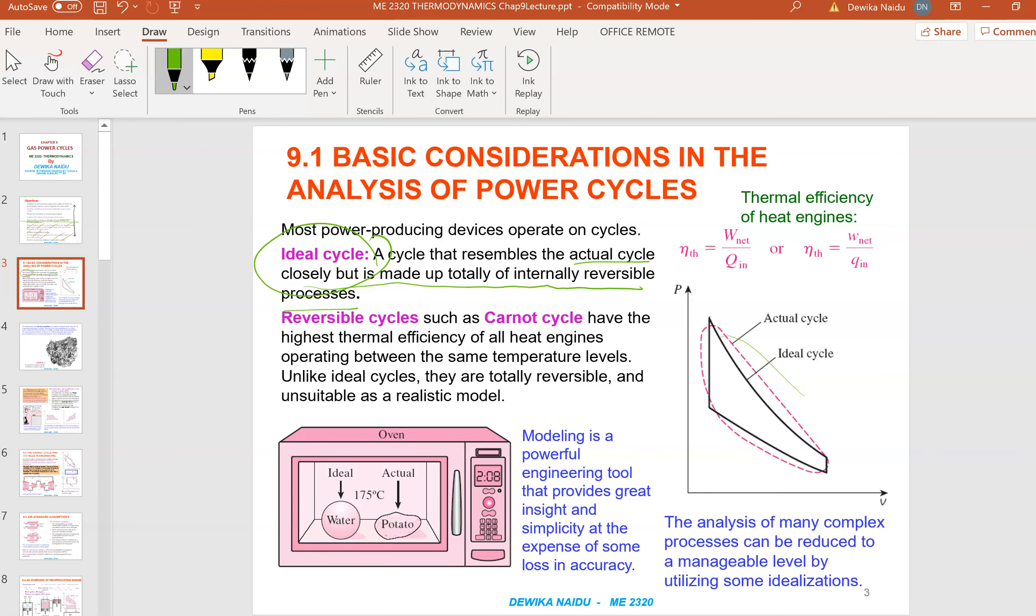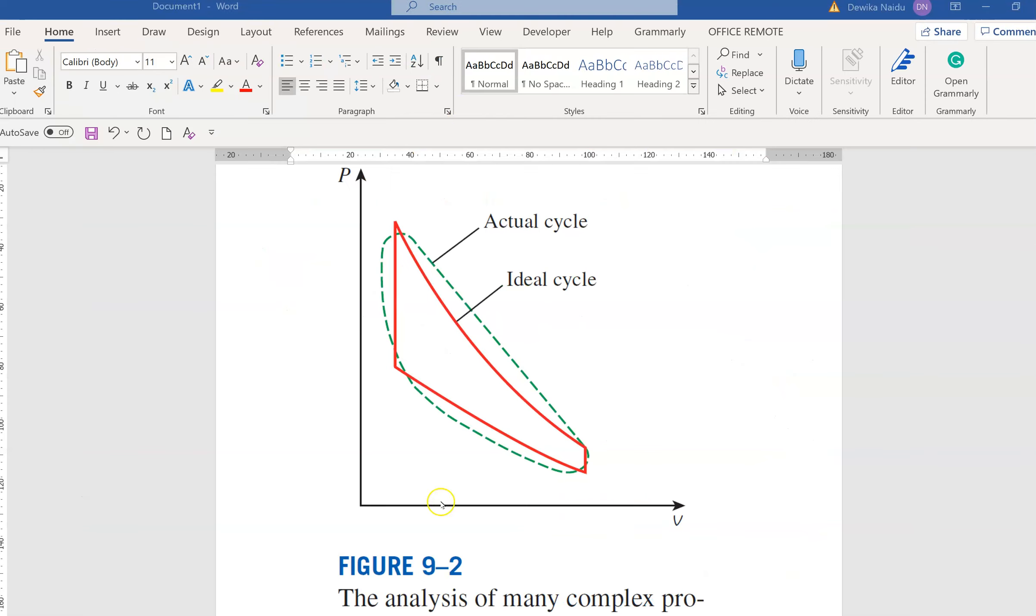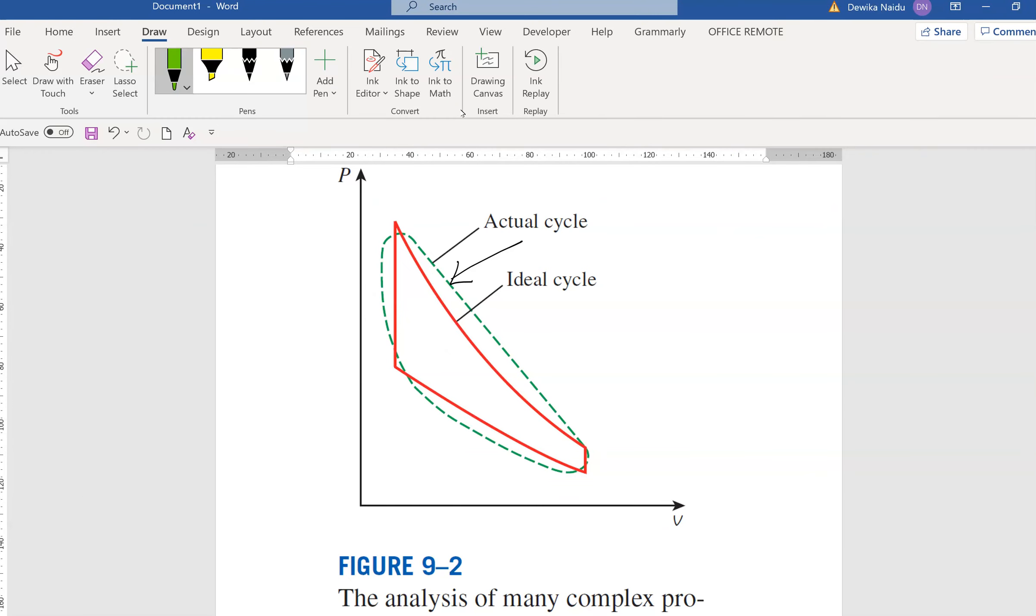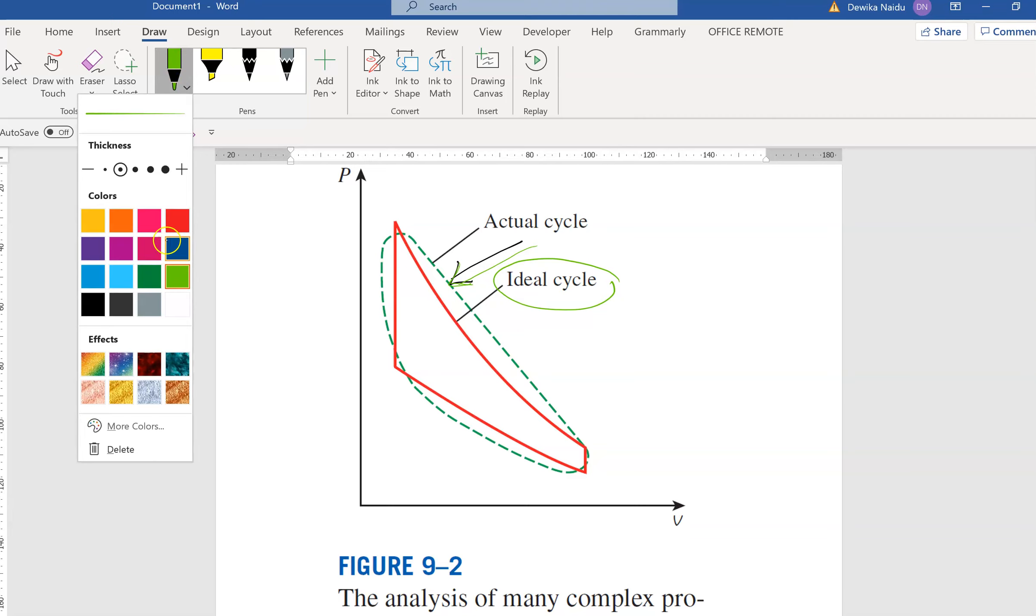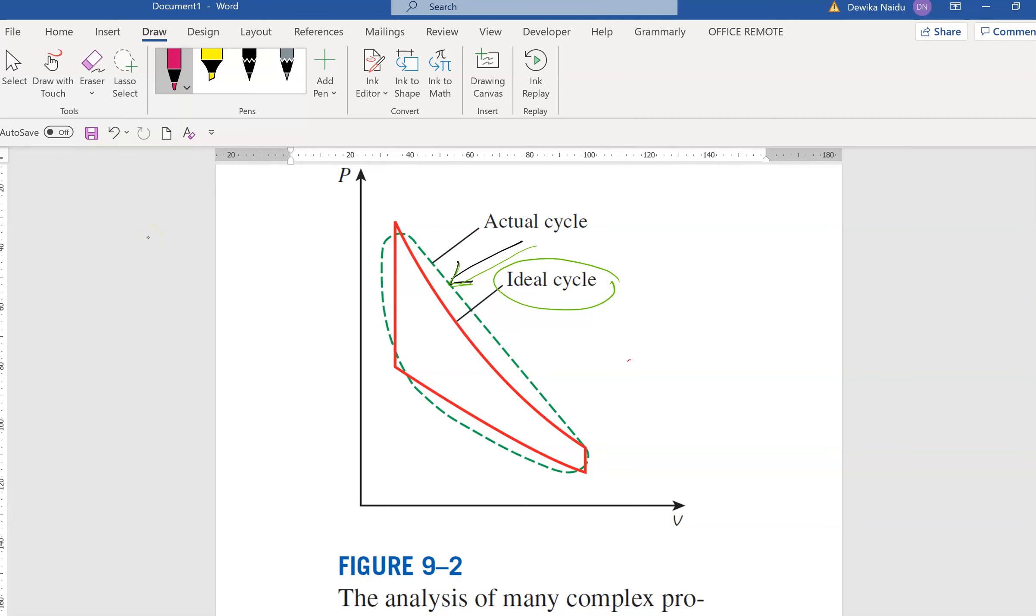What I am trying to say here is, let us look at this. This is what is happening in your actual life, the green line. If you look at this, the actual cycle is the green dotted line. That is what is happening in your daily life. Whereas, the ideal cycle is the red line.